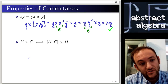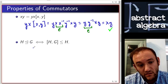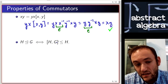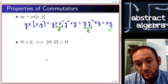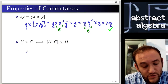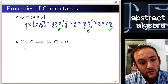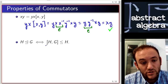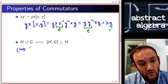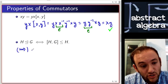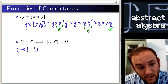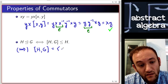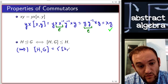Now let's look at the next assertion. If H is a normal subgroup of G, that condition is equivalent to the condition that the commutator [H, G] is a subgroup of H. Let's take a look at what that means.